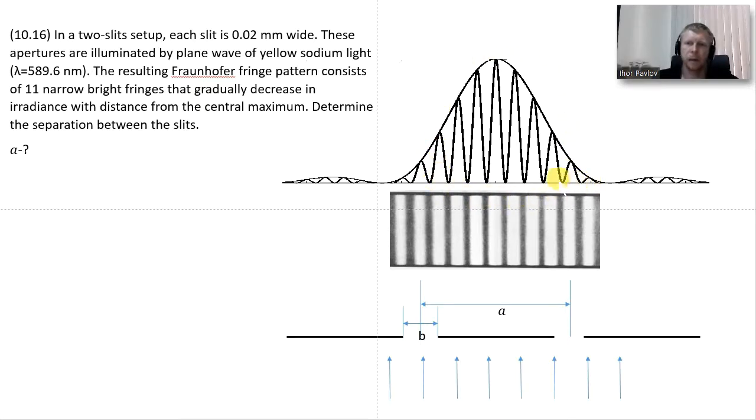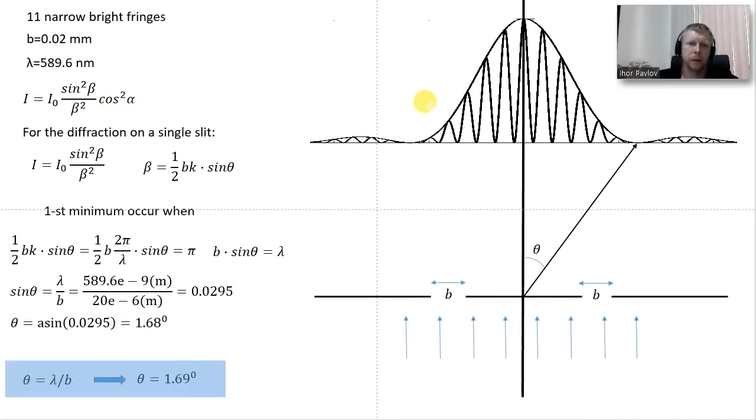As you remember, the diffraction on two slits consists of two terms where one term is a sinc function which describes diffraction on a single slit with width b, and the second term corresponds to interference from double slit. The second term is the same as in Young's experiment. We have these two functions, interference on two slits and diffraction on a single slit, and they are multiplied.